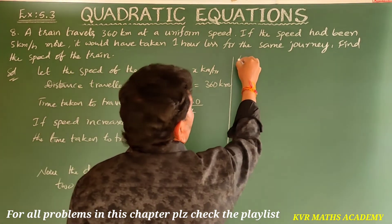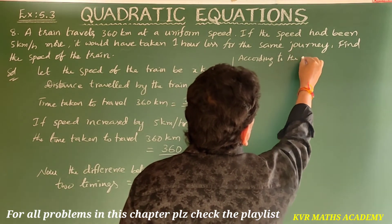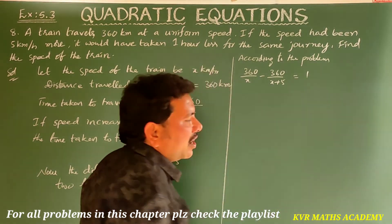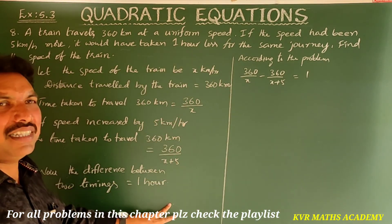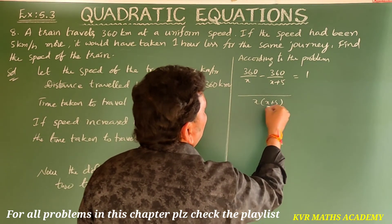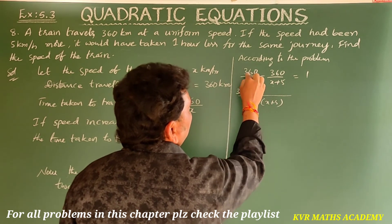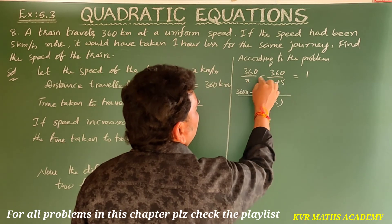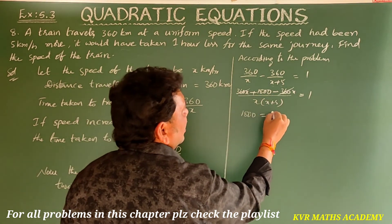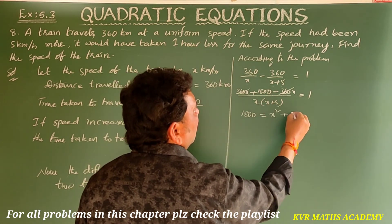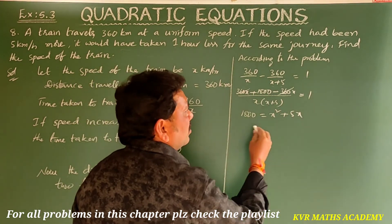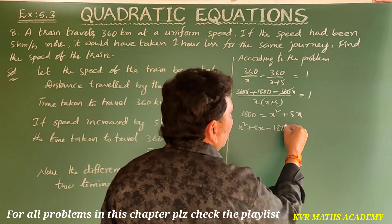According to the problem, 360 by X minus 360 by (X plus 5) equals 1. Taking LCM as X(X plus 5), we get 360(X plus 5) minus 360X over X(X plus 5) equals 1. Expanding: 360X plus 1800 minus 360X equals X(X plus 5). The 360X terms cancel, leaving 1800 equals X squared plus 5X. Transferring: X squared plus 5X minus 1800 equals 0.